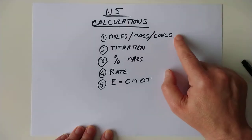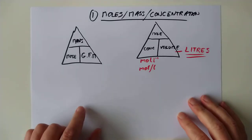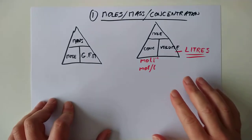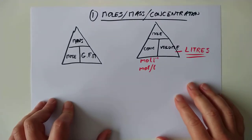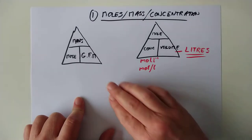I think the first one we will start with is number one. So for these calculations, we're going to invoke these two triangles. A very quick run through how to use these triangles. For any particular triangle, you need to know two of the three pieces of information, and you can work out the third one, the one you don't know, by covering it up.